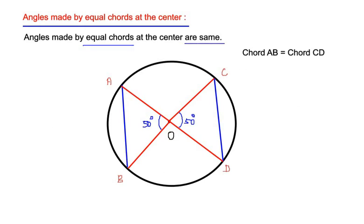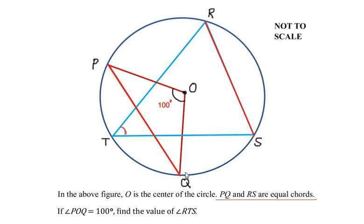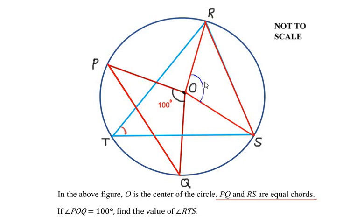Now let us use this theorem to solve the example. It is already given that chord PQ makes an angle at the center of 100 degrees. Using chord RS at the center, we get angle ROS, and by the theorem, angle ROS is also 100 degrees because these two chords are equal.